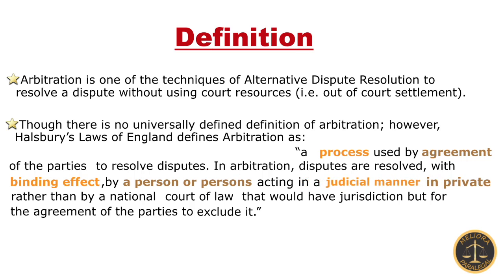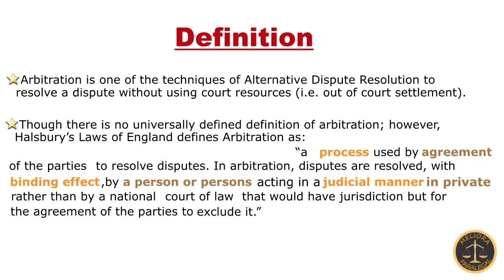The fifth term is 'acting in a judicial manner.' It means the proceedings will be similar to litigation. However, the difference is litigation is more formal and strict, whereas arbitration is less formal and flexible. The sixth term is 'in private.' It means the place and proceedings of arbitration are confidential and no one is allowed to disclose it, whereas court proceedings are usually not confidential.